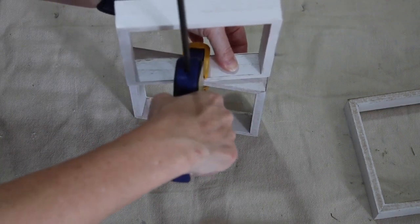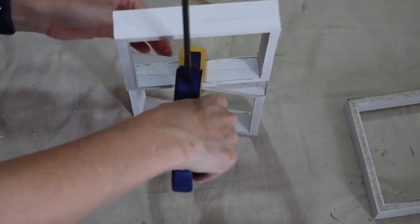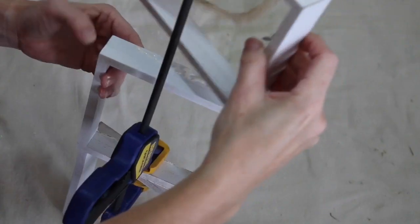Going in with some wood clamps. Again, this is a choice or an option. If you don't have wood clamps, you can just stack them and the glue will dry. This just makes it a little bit extra secure.